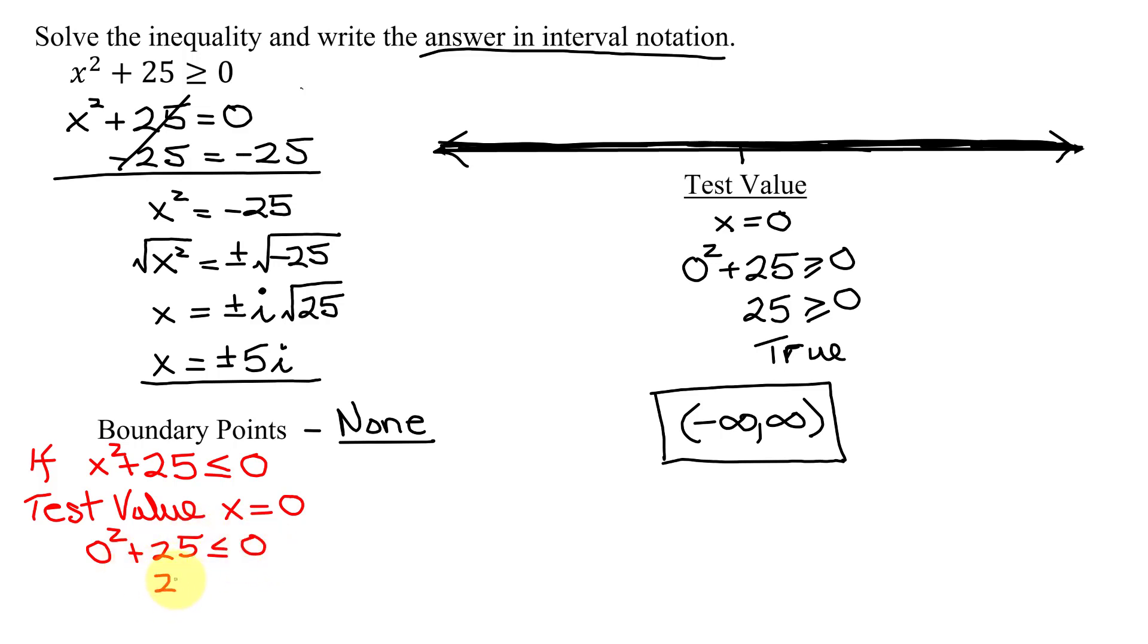Plugging that into this inequality, I'd get 0 squared plus 25 is less than or equal to 0. Well, that is 25. Is 25 less than or equal to 0? That is a false statement. So the inequality is false for my test value and every other point in that interval. That means for every point on the number line, it will be false. So this inequality here would have an answer of no solution.